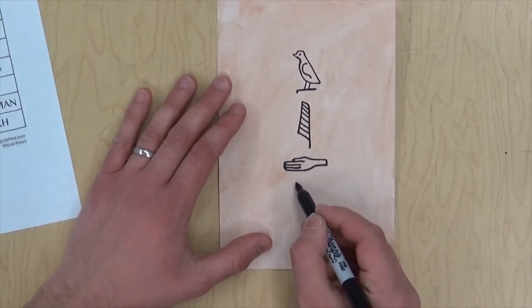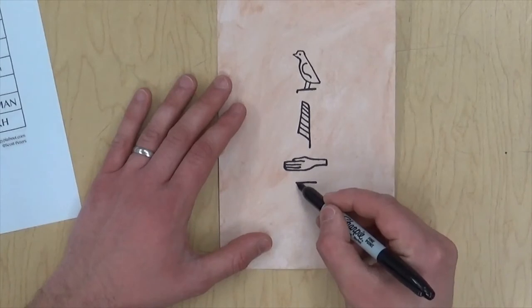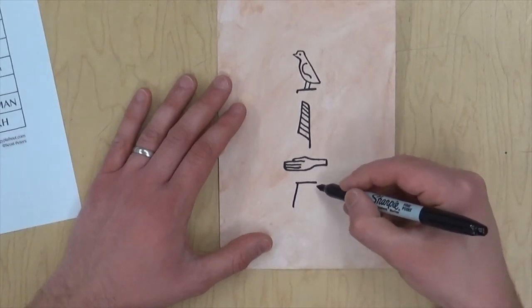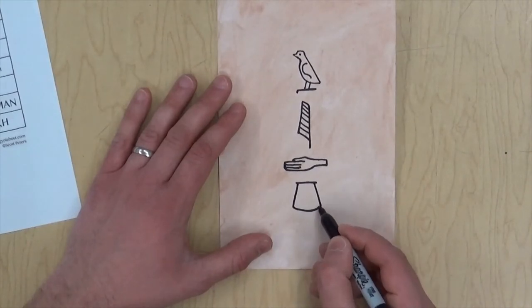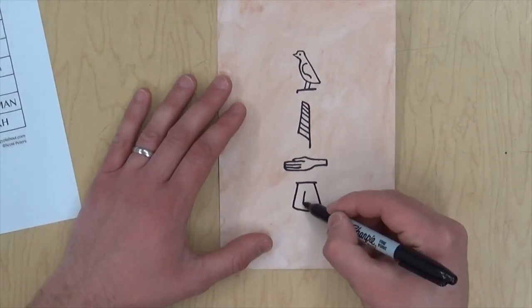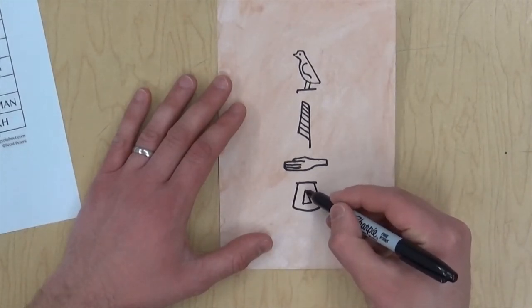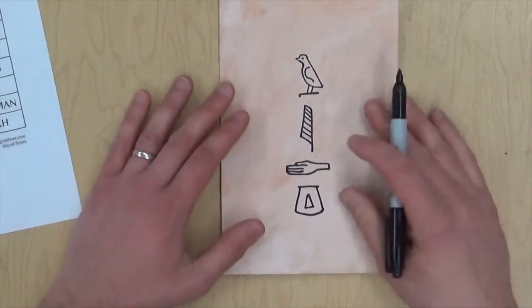And then I will draw a pot for the G sound. It doesn't really look like a pot, but like I said, it's an ancient hieroglyphic symbol that represents a pot, what it looked like in ancient Egypt, which was a very long time ago.